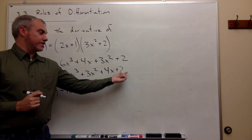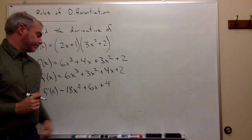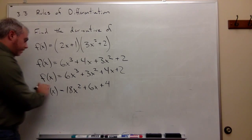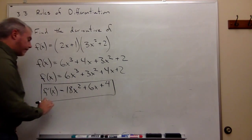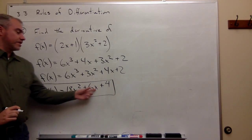And then the derivative of a constant like 2 is 0. So the answer is 18x squared plus 6x plus 4.